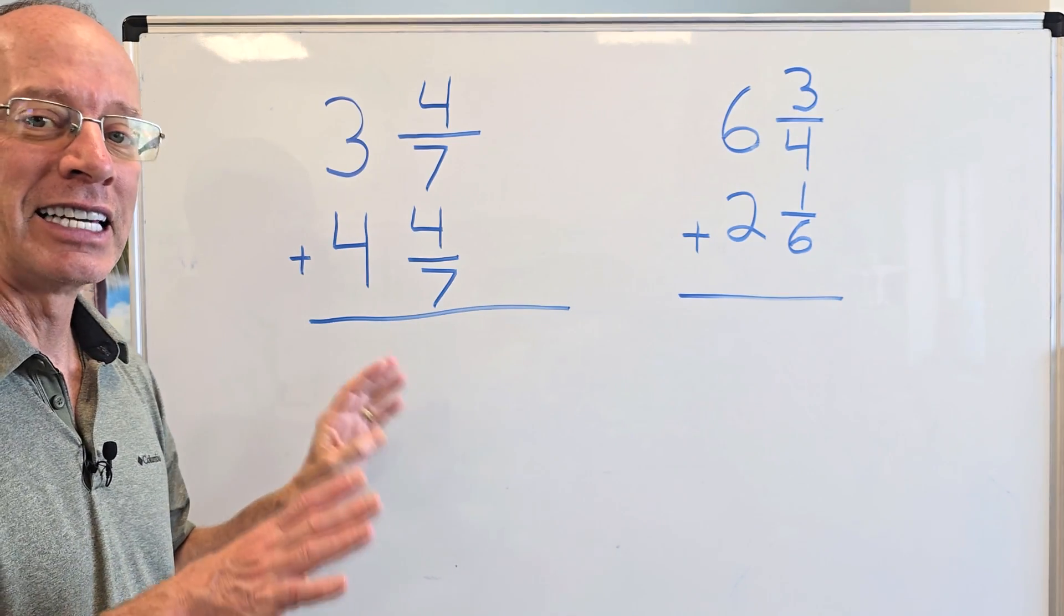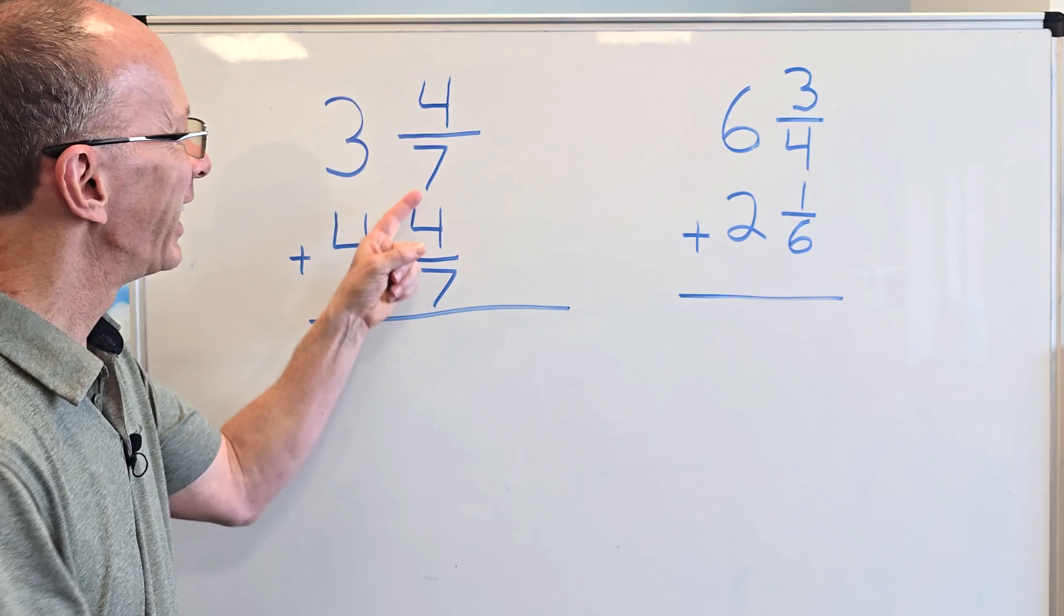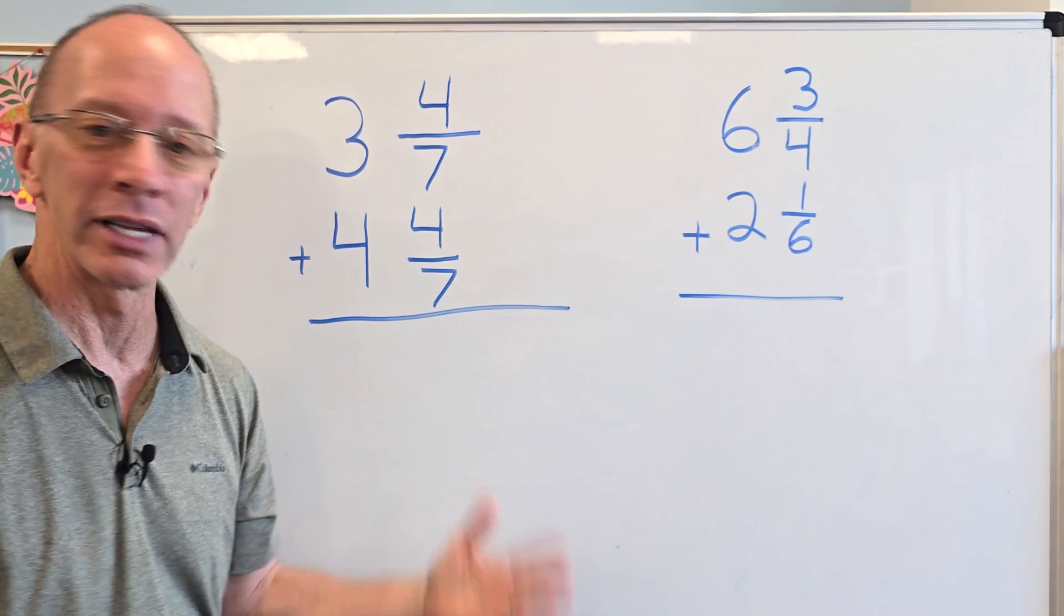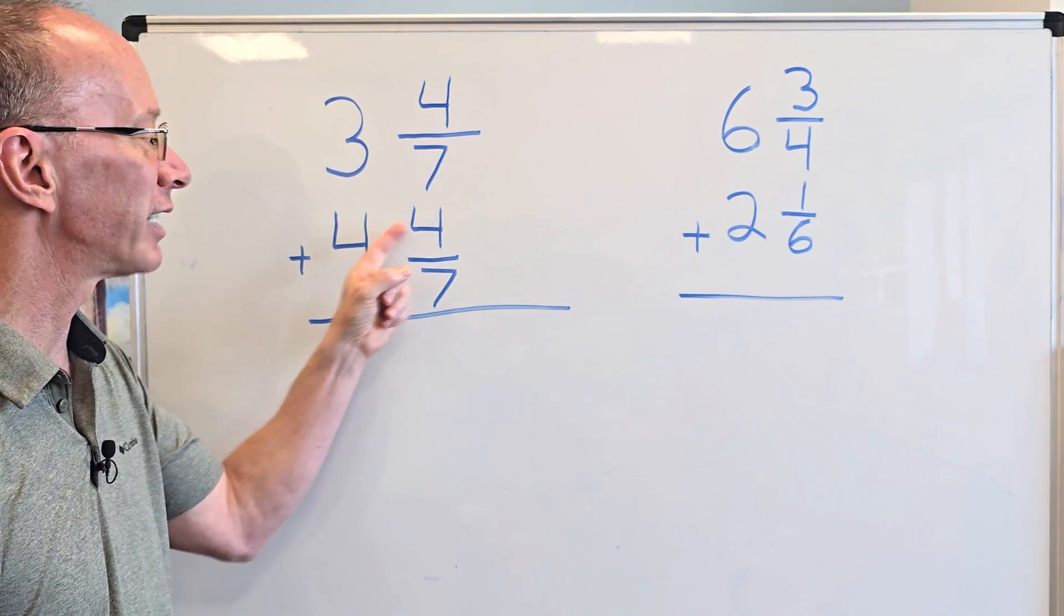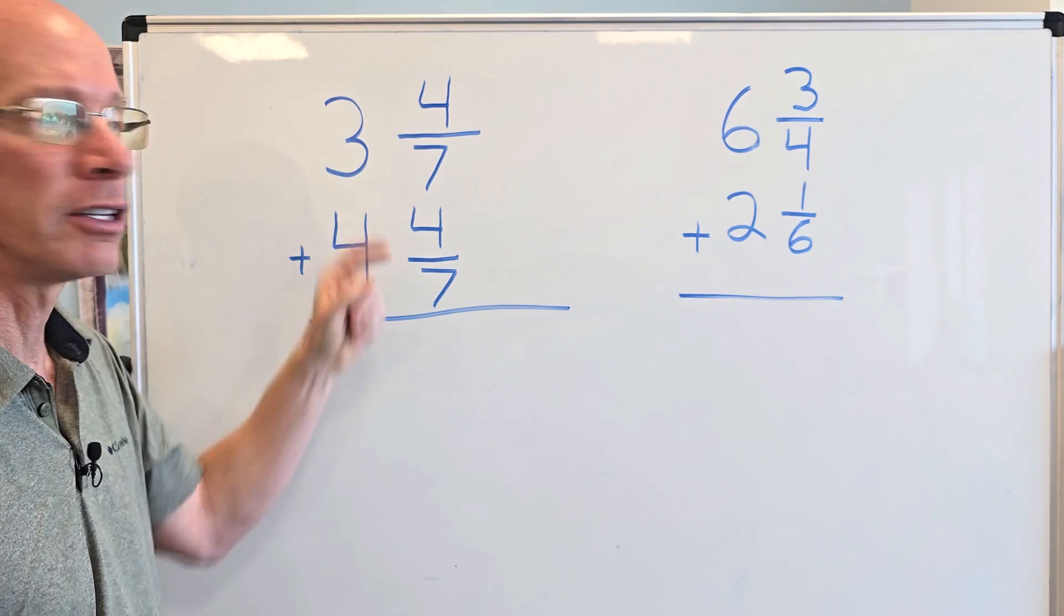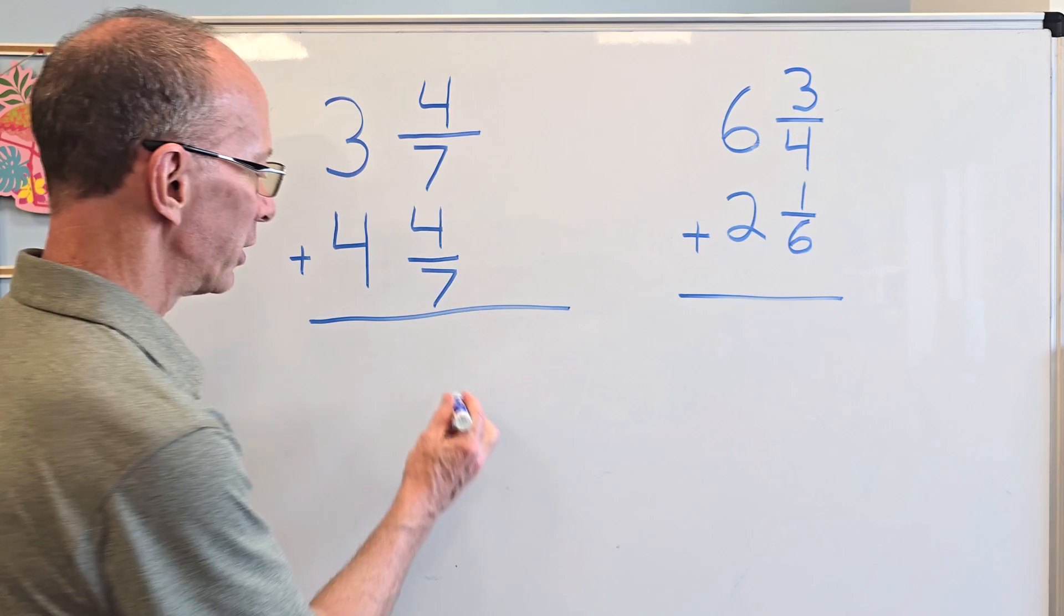First thing I look at is the denominator. I just love that name, denominator. And I see if that denominator is the same, and if it is the same, you don't have to do a lot of work. All you have to do is just add the numerators. So right now I'm going to add the numerators. What is 4 plus 4? 8.